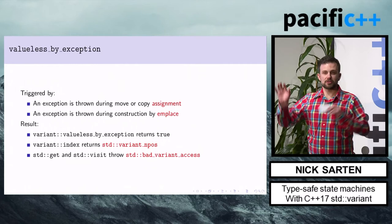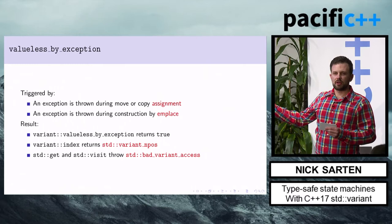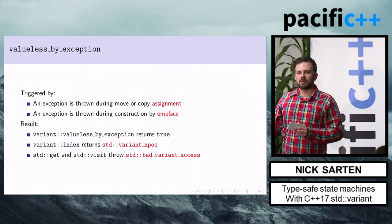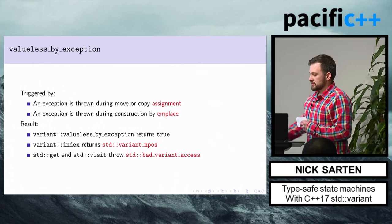This is something you want to avoid. You can avoid it by using noexcept specifiers on your constructors and assignment operators — this selects the right overloads and doesn't generate the code that leads to this state. You can still resume using the variant if you assign a new value to it.